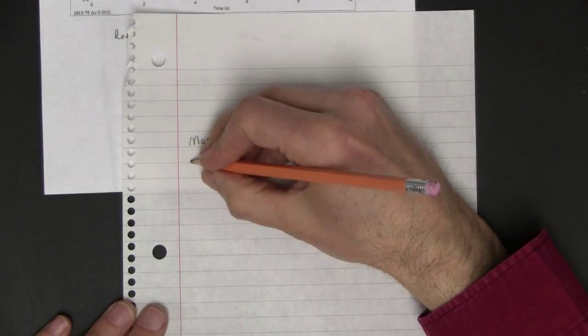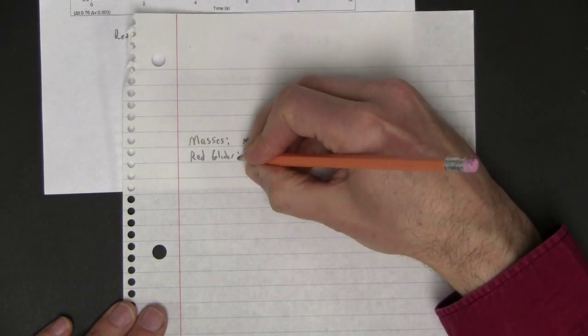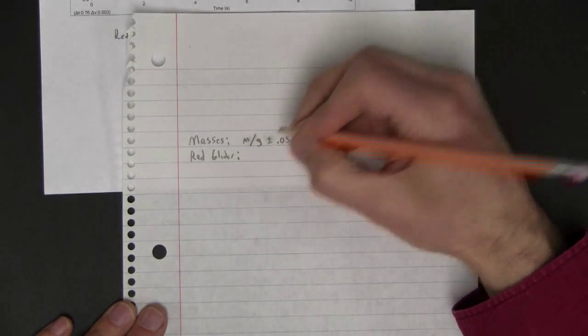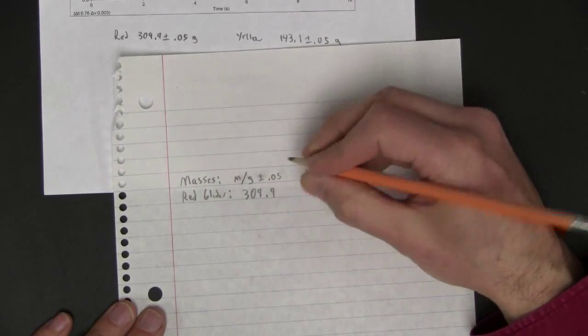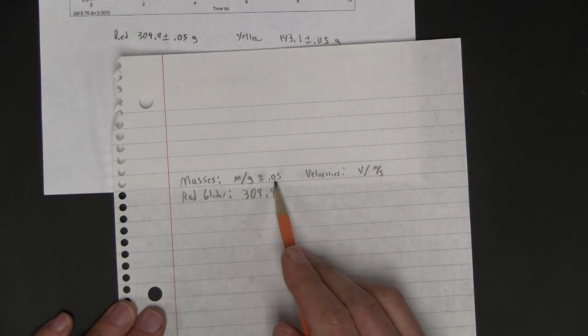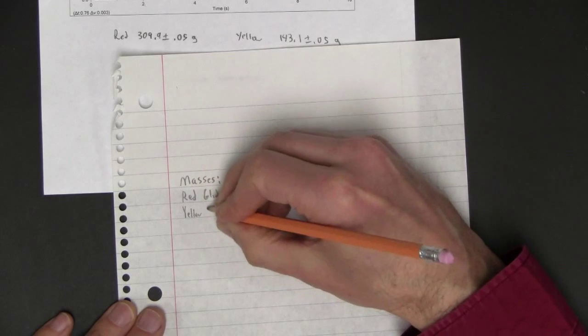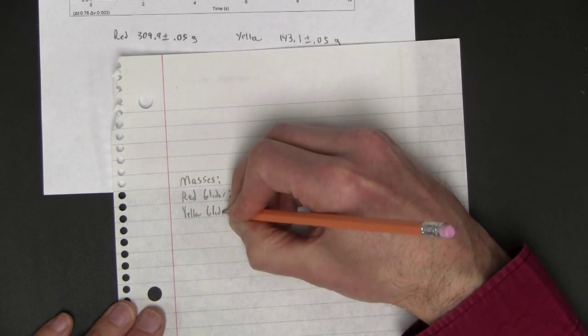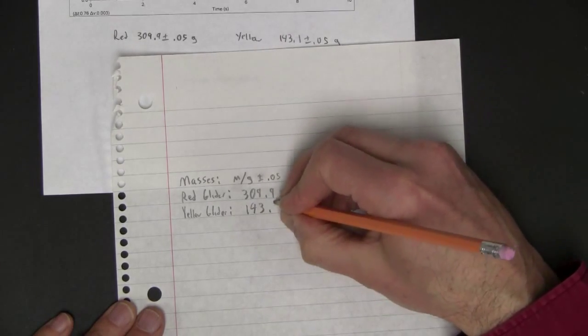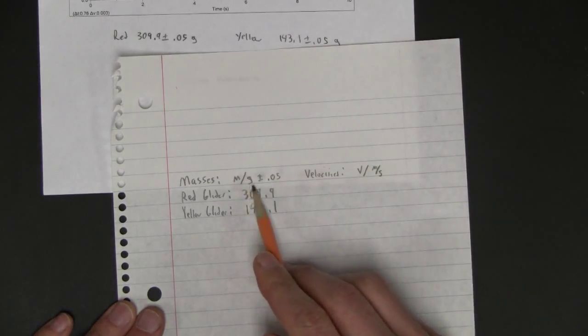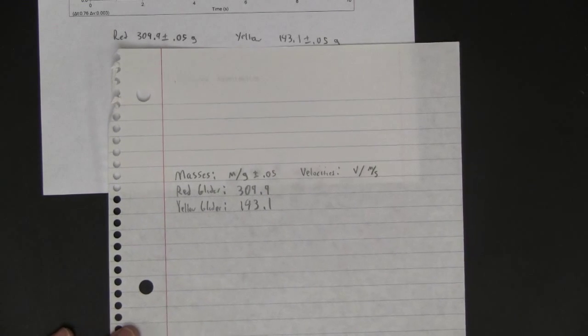My mass is the red card was 309.9. And since I've already said grams in plus or minus 0.05, I'm done with that. The yellow glider was 143.1. And again, that's mass in grams plus or minus 0.05. So we're pretty good here so far.